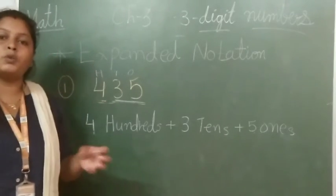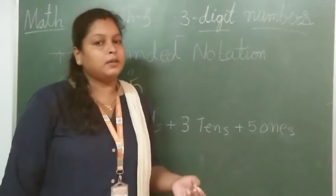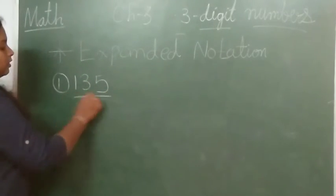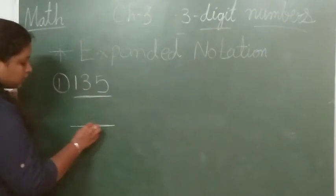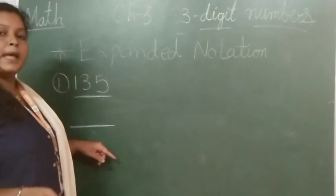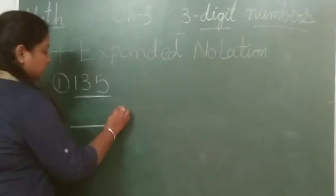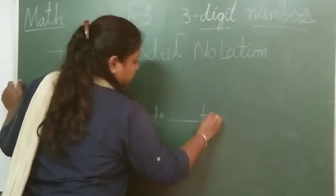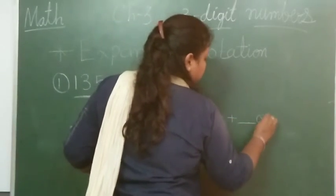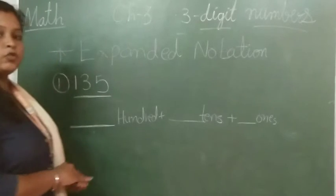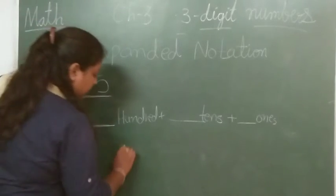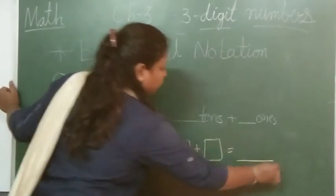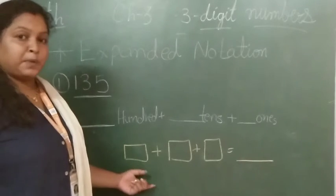Same thing you have to do with whatever number is given to you. Now you will see examples. The number is 135. What you have to do is fill the boxes or fill the blanks, whatever is given in your textbook. It is given to you like this: blank hundreds plus blank tens plus blank ones. And after this, there are 3 boxes given to you, equal to blank.